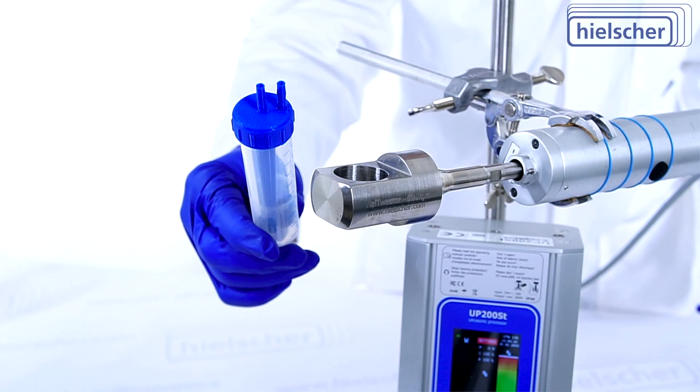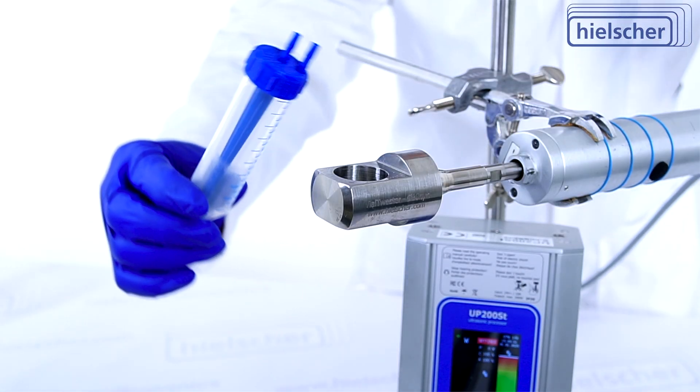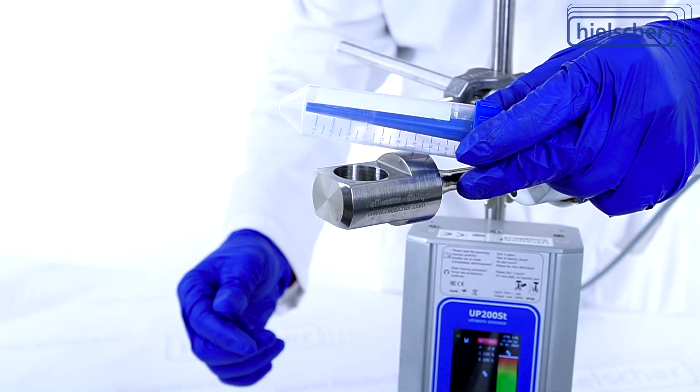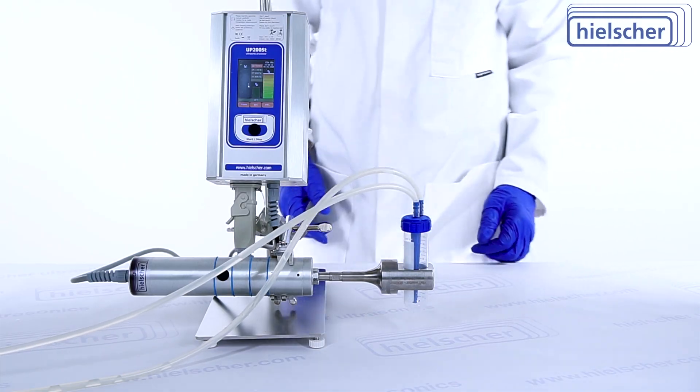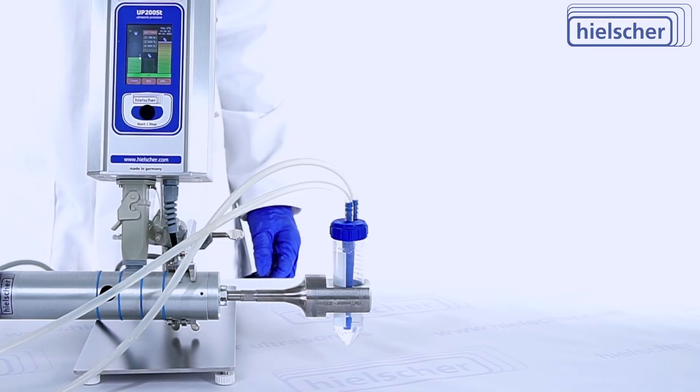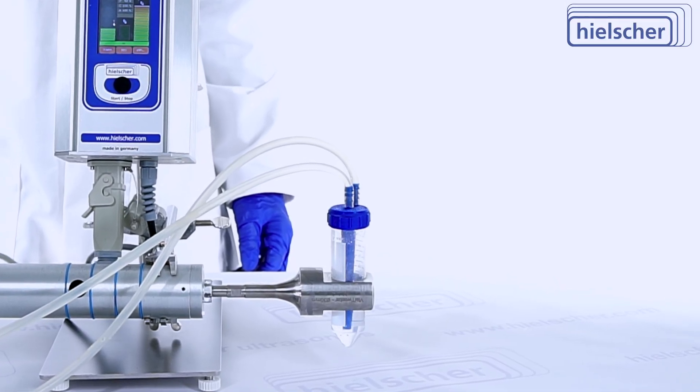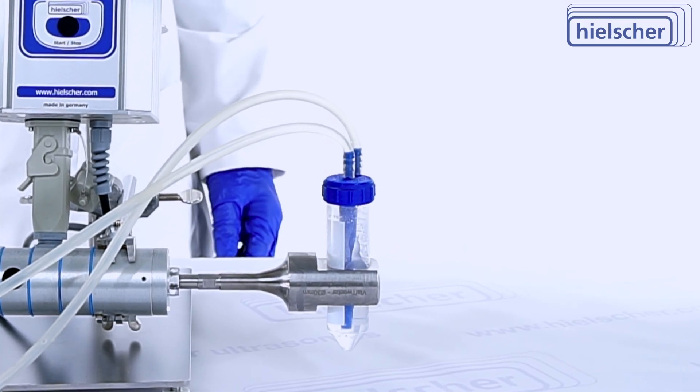When used with a specialized reactor lid, the falcon tube becomes an inline sonication system. An inlet at the bottom and an outlet at the top enable continuous or recirculating flow. Fluid enters the tube at the base, travels through the cavitation zone, and exits at the top.